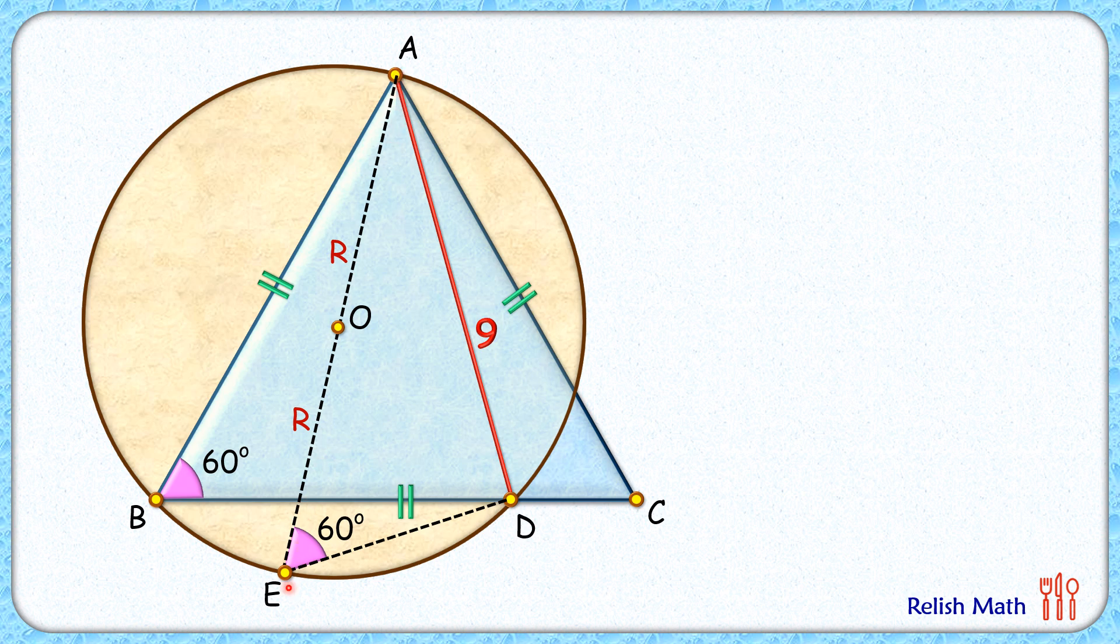Now AE is the diameter and thus by theorem this angle here will be 90 degrees. In this right angle triangle AED, applying trigonometry we get AD equals AE times sin 60 degrees.